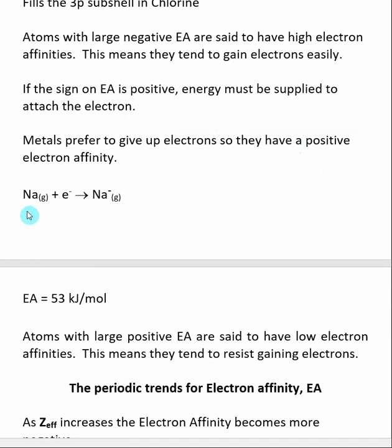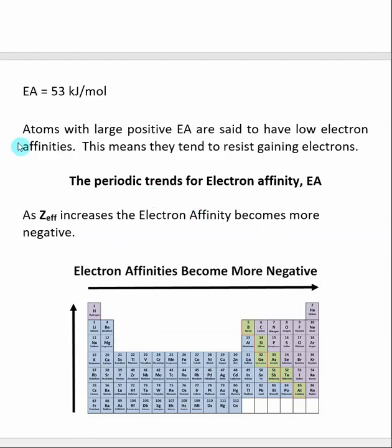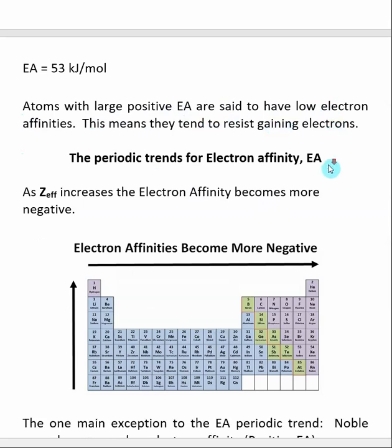Sodium does not want to gain the electron, and when we look at the electron affinity of sodium, it's actually a positive number. So this means that it will take energy for sodium neutral to gain an electron to become sodium minus. In general, atoms with large positive electron affinities are said to have low electron affinity. That means the atoms tend to resist gaining electrons.